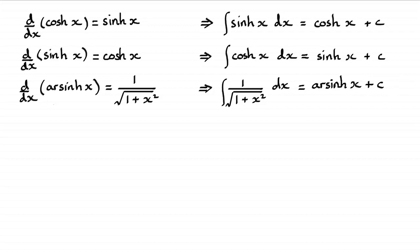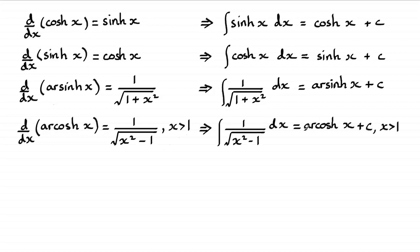And one more. We discussed when we were looking at the differential of inverse hyperbolic functions the differential of arccosh x. Can you remember what that was? Well it was this result. It was one over the root of x squared minus one and x had to be greater than one. So when it comes to integrating one over the root of x squared minus one then it's going to be arccosh x plus that constant of integration. And it's defined only if x is greater than one.